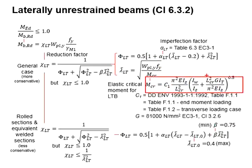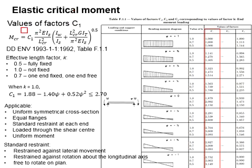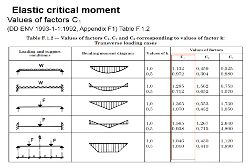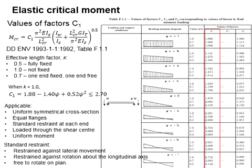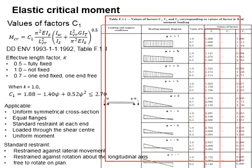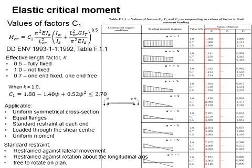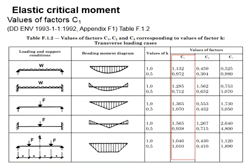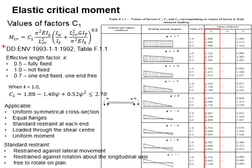Next, we deal with the elastic critical moment. Specifically, we need to get the factor C_1. The factor C_1 can be obtained from Table F.1.1. It is for the case of end moment loading. It may also be obtained from Table F.1.2 for the transverse loading case. To be simple, you may use this table for intermediate span of a continuous beam, and you may use this table for a single span of a beam. These two tables can be obtained from this standard.